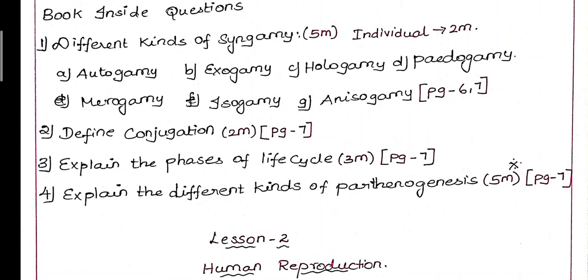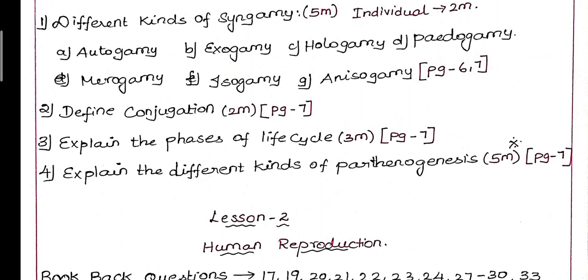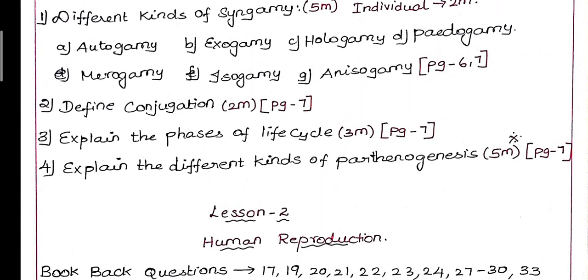Second question is define Conjugation. This is a 2 mark, page number 7, the paragraph at the bottom of your page. Third question: Explain the phases of life cycle. This is a 3 mark question, page number 7. If you already have a book back, you can ask a question about how will you differentiate juvenile phase and reproductive phase. So that is included here.